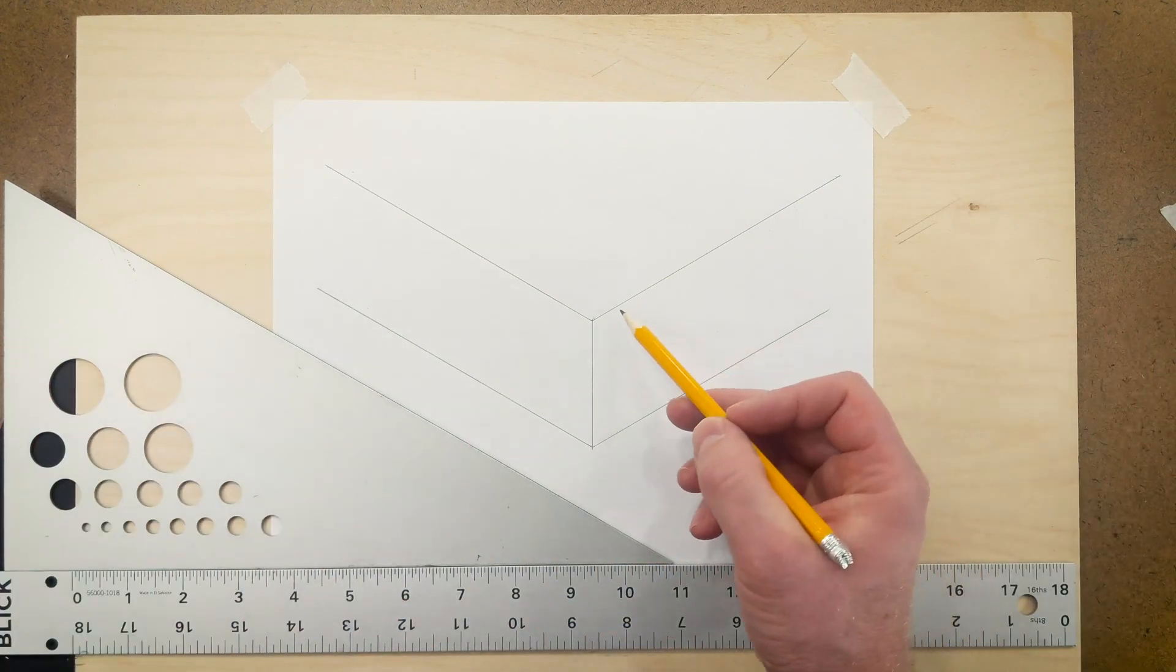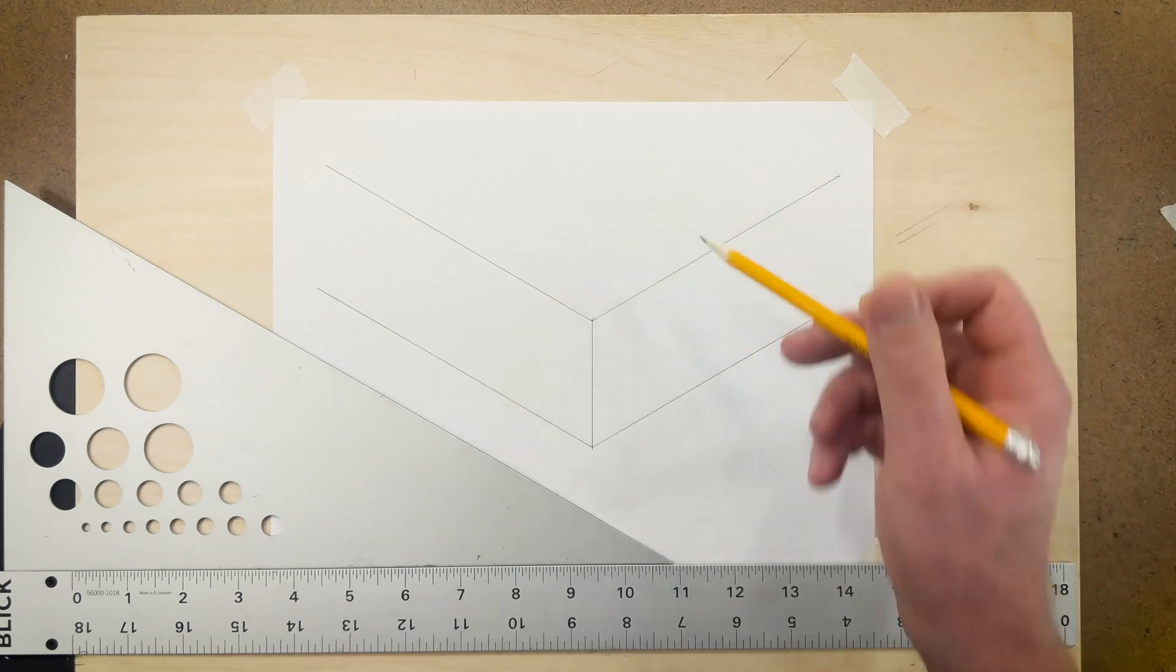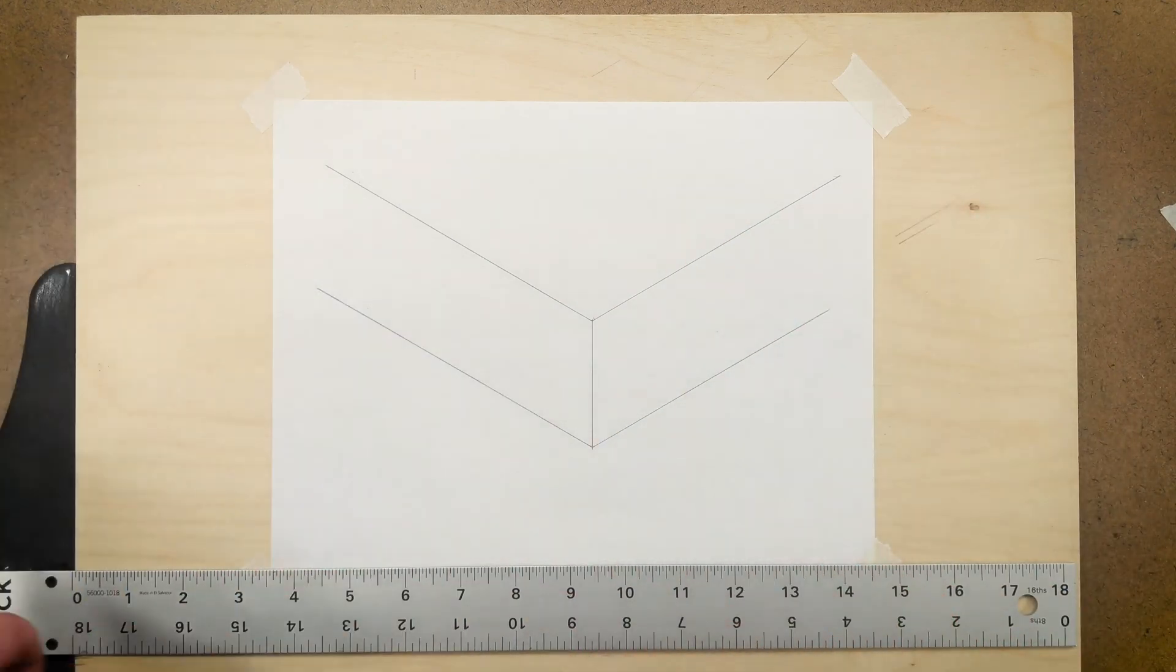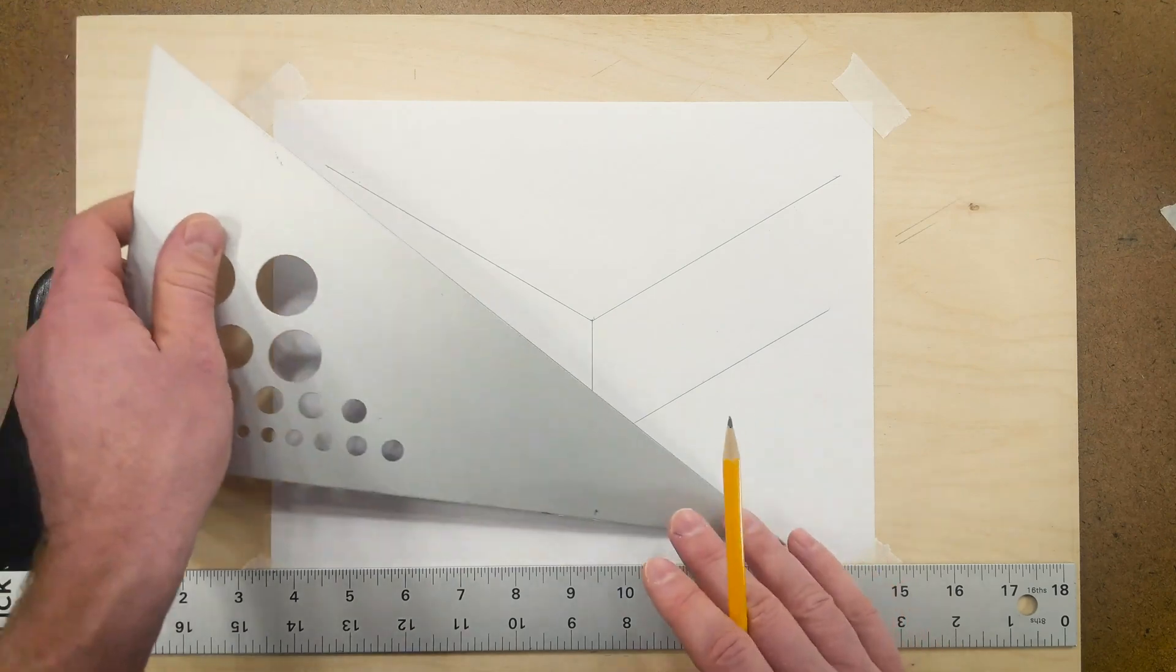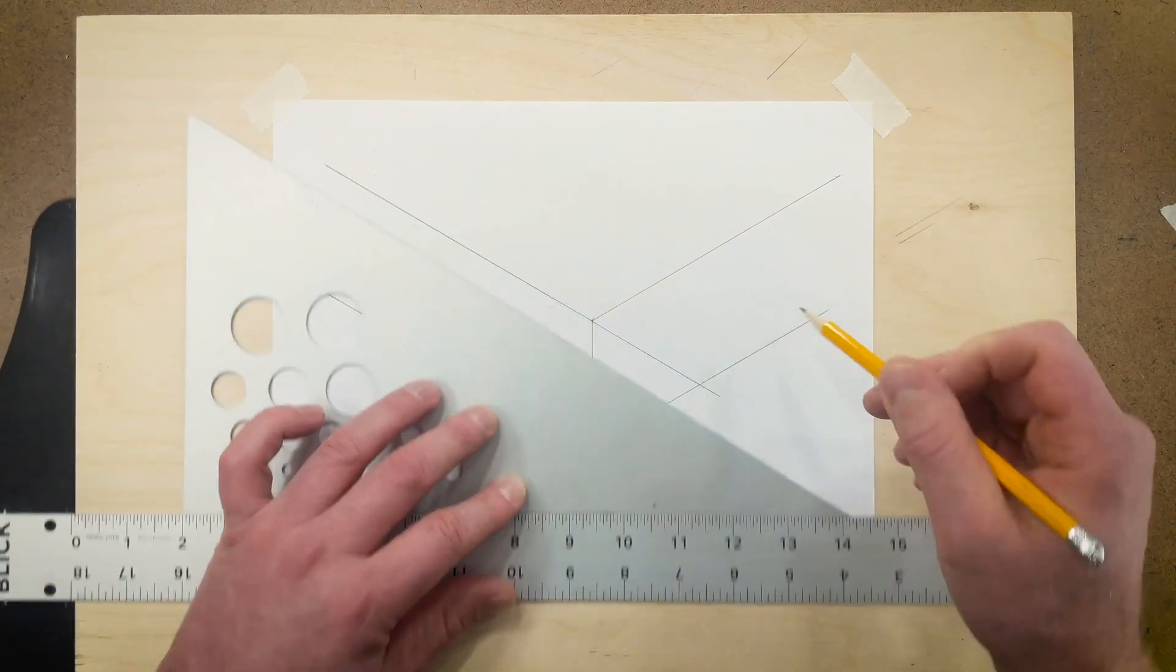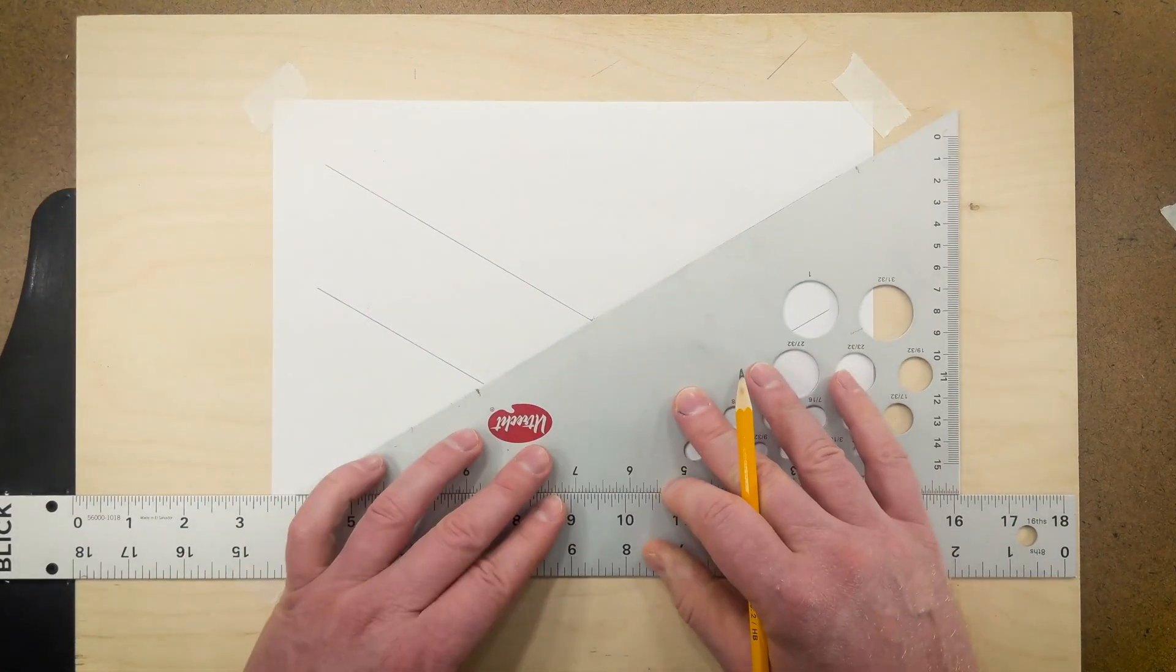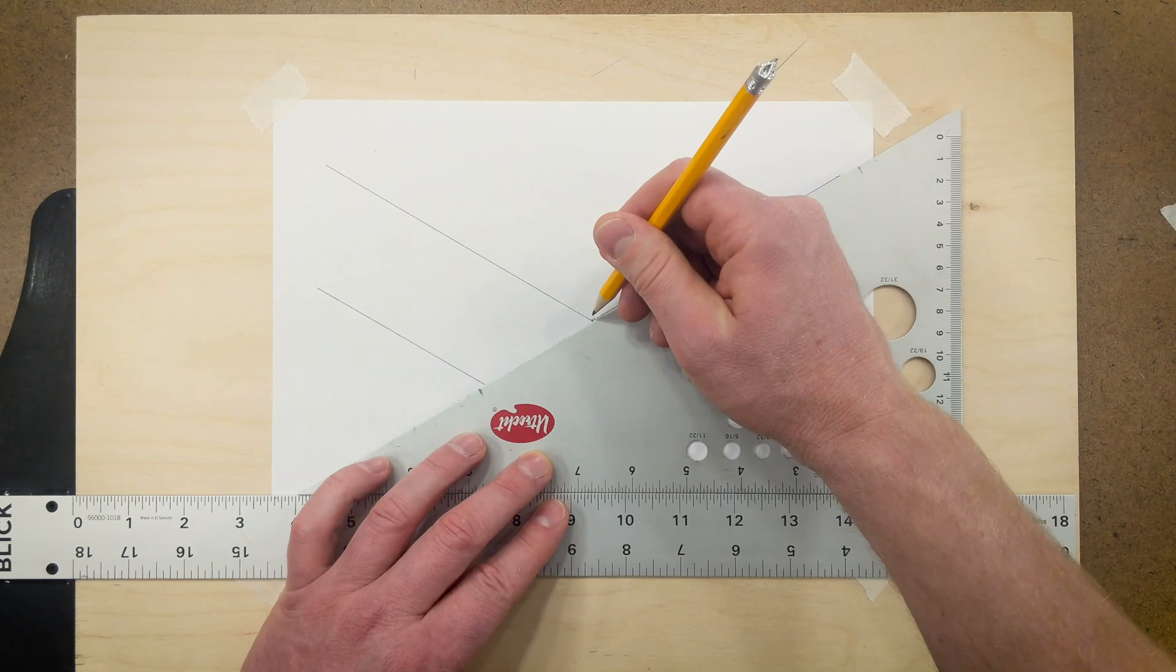But wait! How do we find out where the side corners are? One way to do this is to extend these lines down. So we can go ahead and use the triangle on the bottom to draw this line down and this will be our corner. And then we can extend this line down and this will be our other corner.